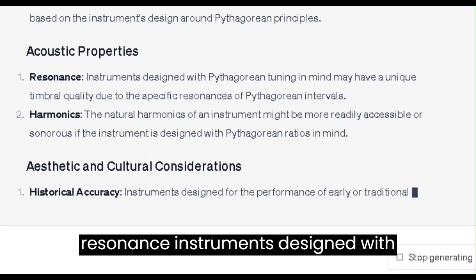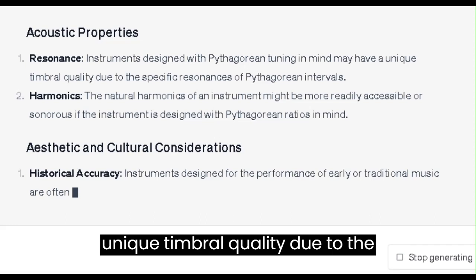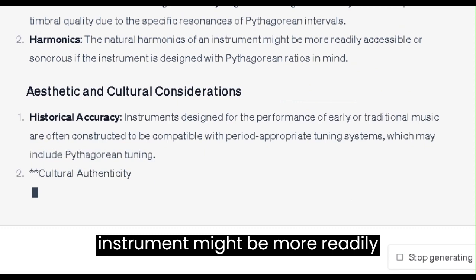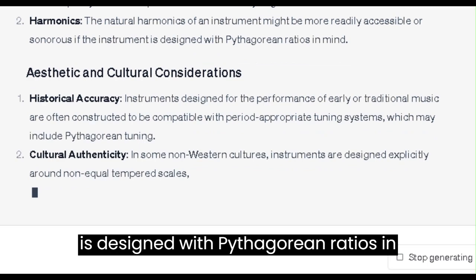Acoustic Properties: 1. Resonance. Instruments designed with Pythagorean tuning in mind may have a unique timbral quality due to the specific resonances of Pythagorean intervals. 2. Harmonics. The natural harmonics of an instrument might be more readily accessible or sonorous if the instrument is designed with Pythagorean ratios in mind.